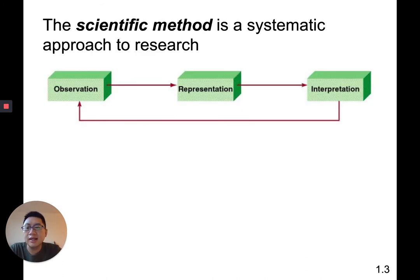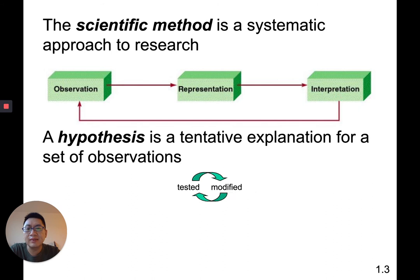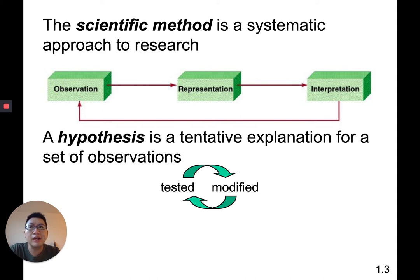This is a science class and we use the scientific method. It's a cycle: we observe something, come up with ideas, do an experiment, test it out, interpret the data, and maybe make new observations — something constantly occurring. A hypothesis is a tentative explanation for a set of observations — you probably know it as an educated guess. Based on what you've seen, it's your idea about it, and it can be tested and modified depending on results.